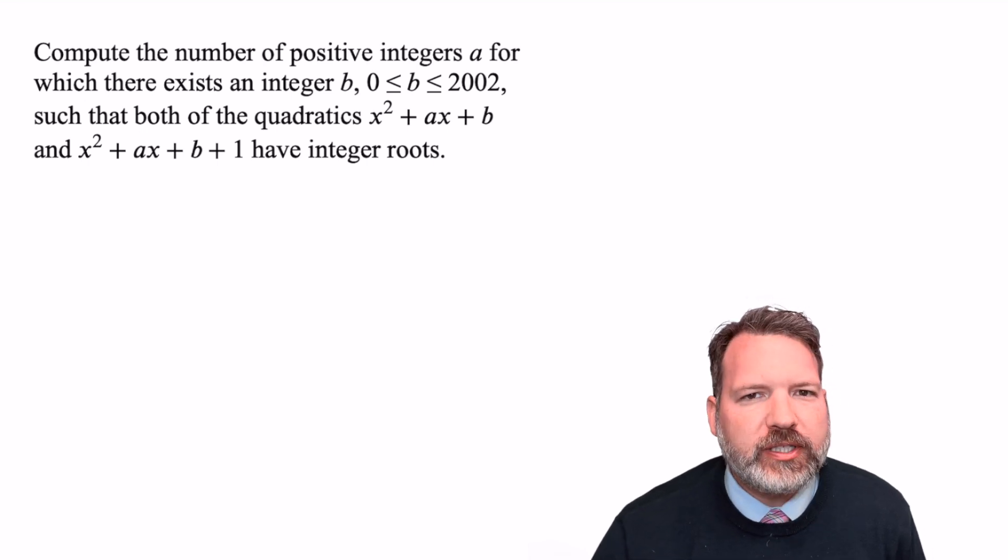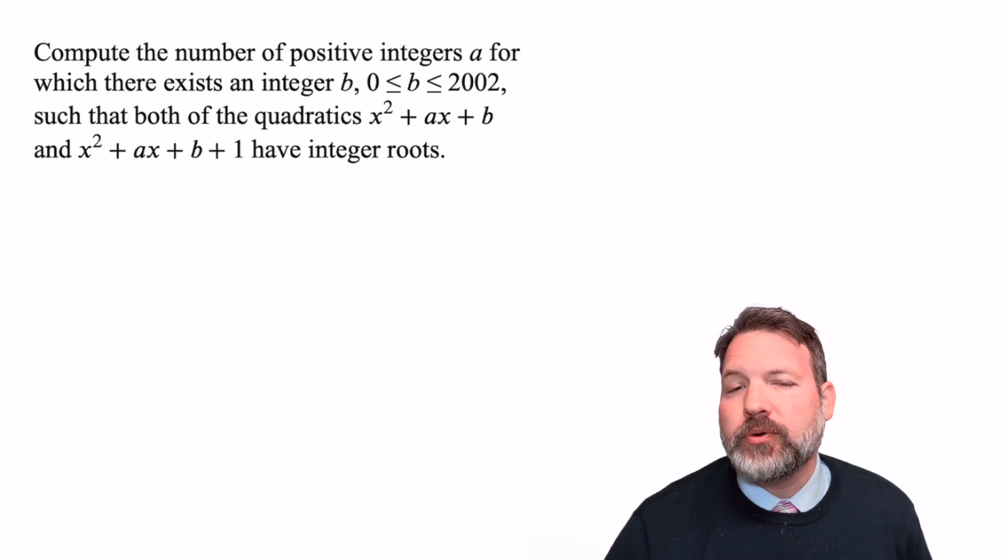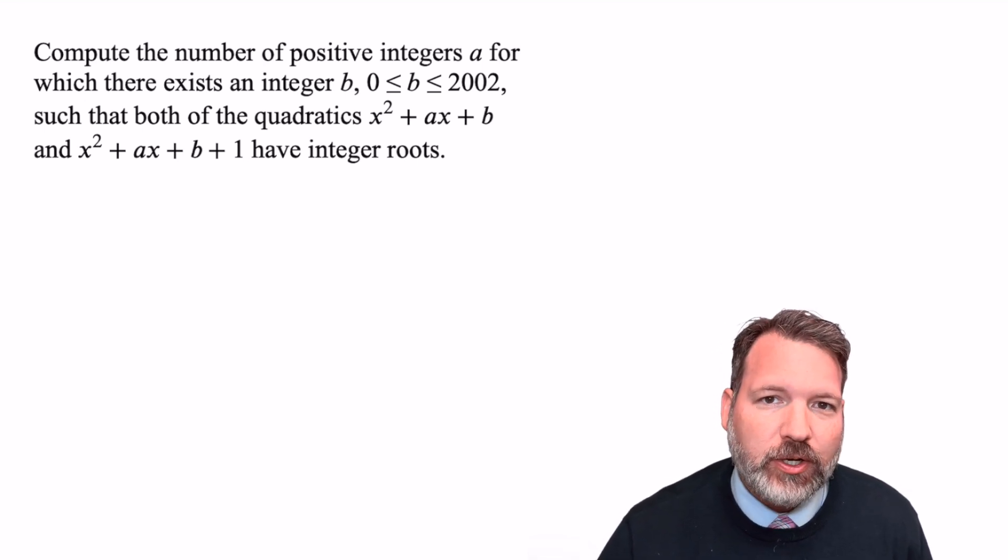Can you think of two rectangles which have the same perimeter, but which have areas that are one apart? If you can, you can answer today's math contest question.